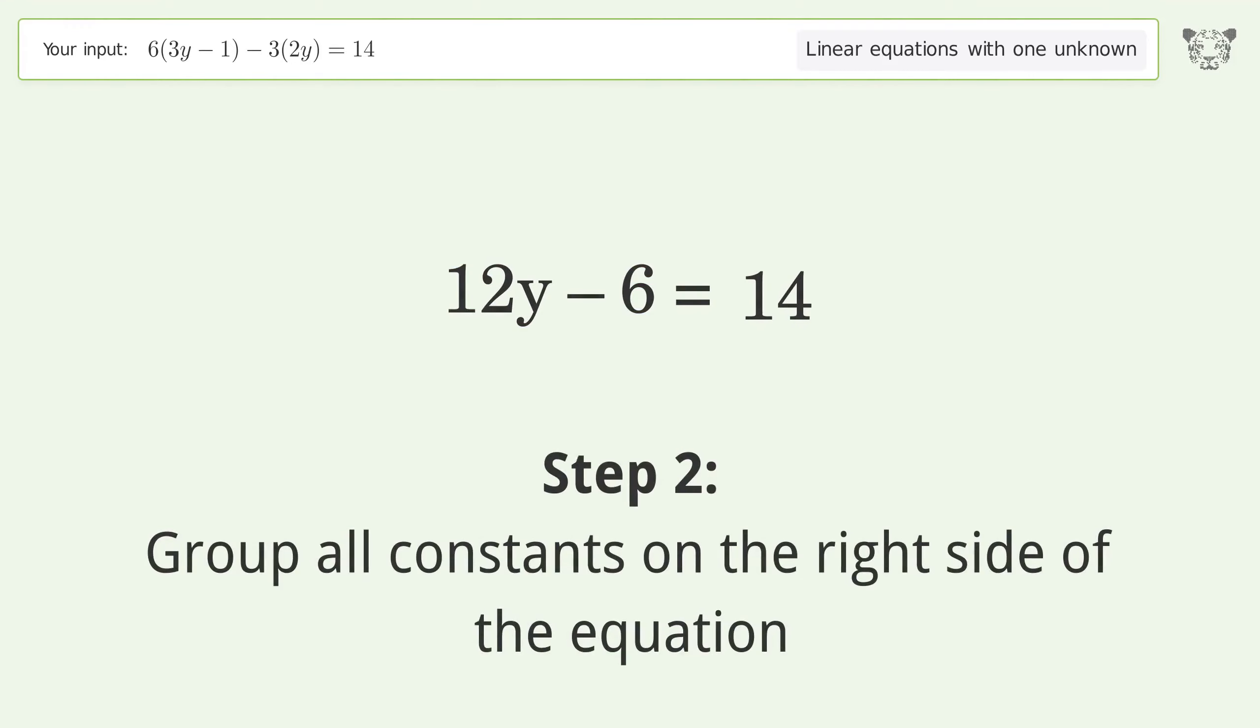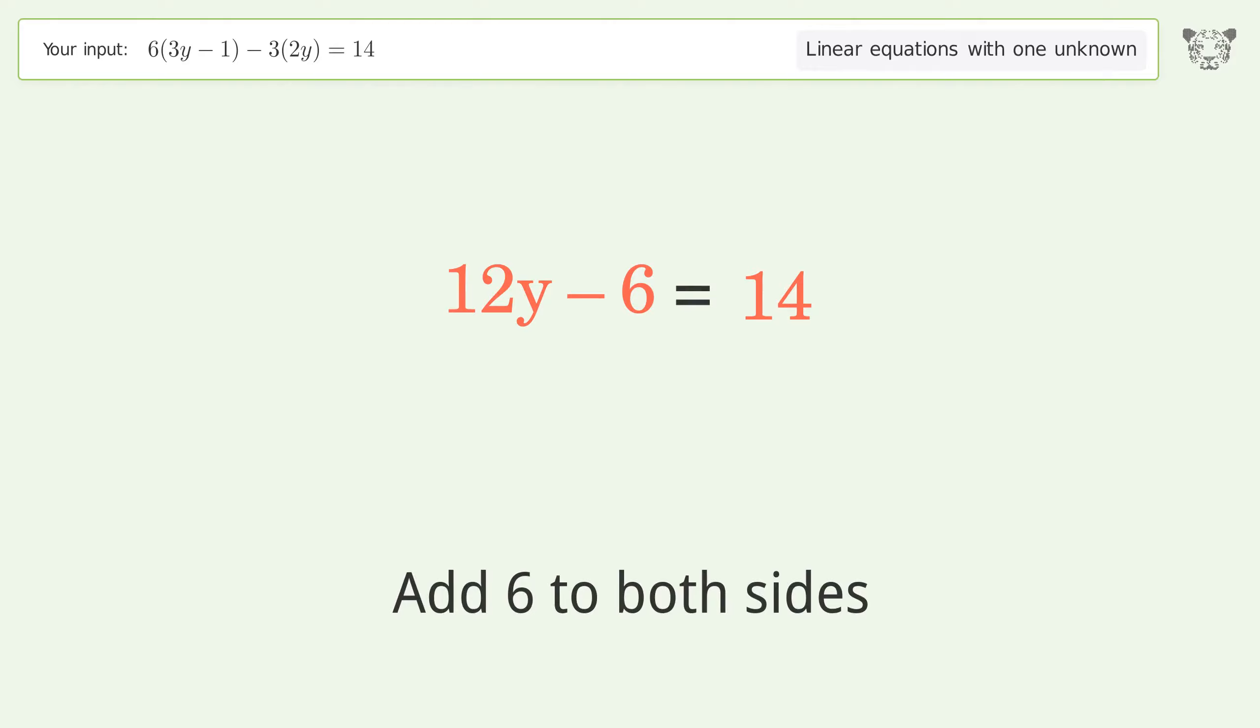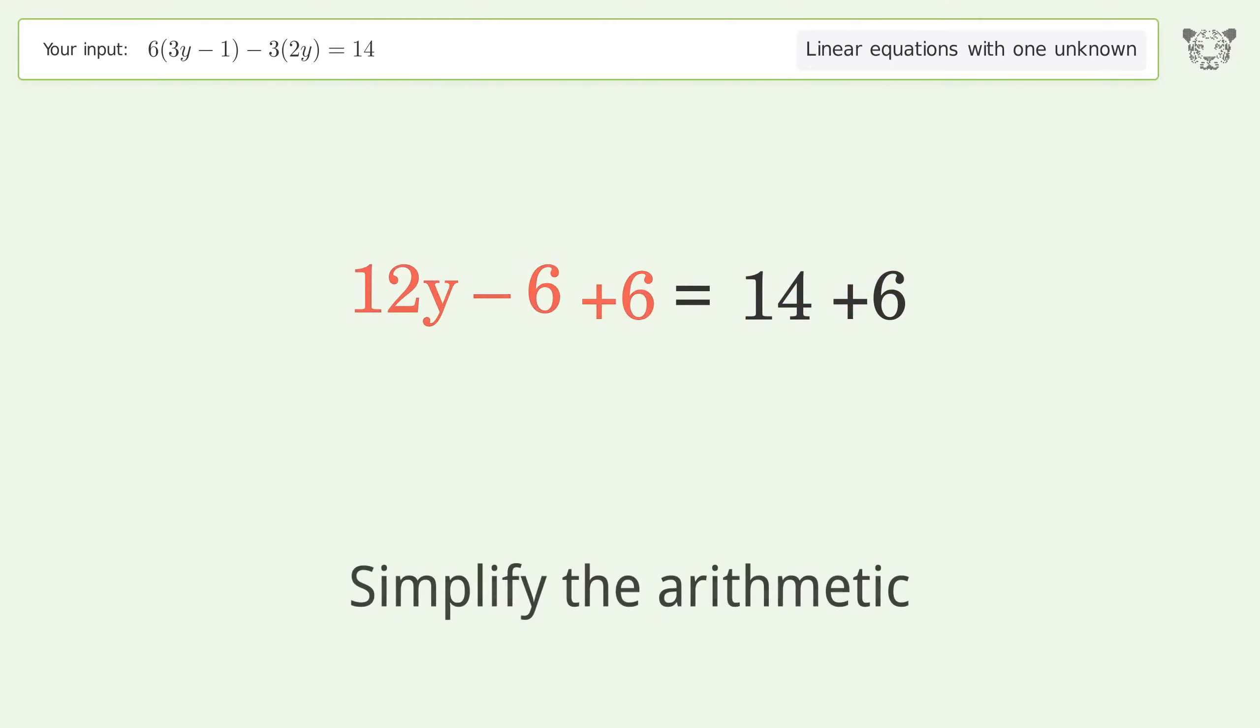Group all constants on the right side of the equation. Add 6 to both sides. Simplify the arithmetic.